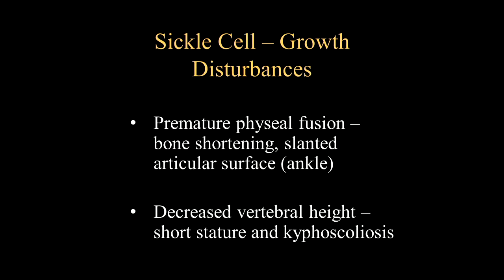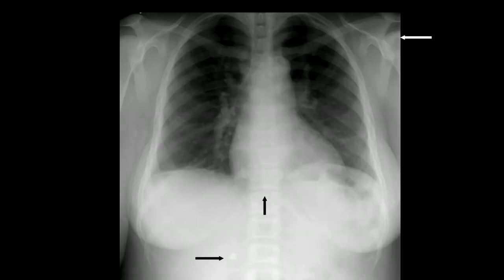Patients with sickle cell can also have growth disturbances, often due to premature physeal fusion. If there is diffuse fusion across the physis, there will be overall bone shortening. If it's more asymmetric, you can have a slanting of the articular surfaces, which is most common in the ankle region. When it involves the vertebral bodies, it can result in decreased height, so patients are short, and they can also have kyphoscoliosis.